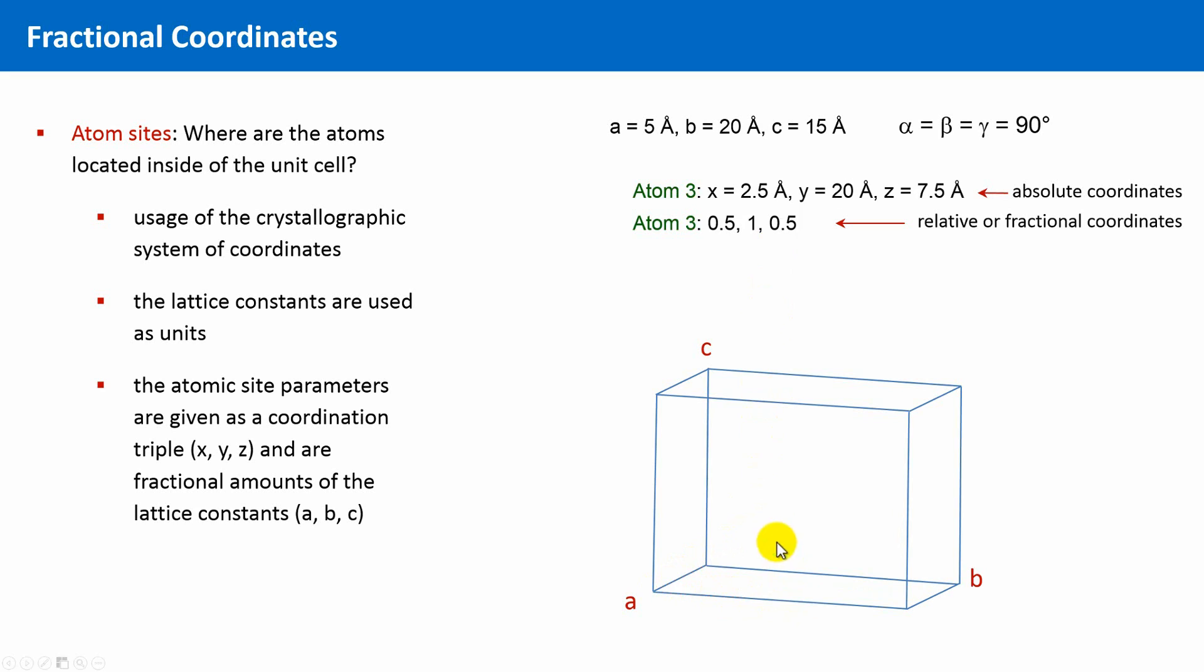And a last example. Atom 3 might be located at 0, 20 and 7.5 angstroms in terms of absolute coordinates. This corresponds to the fractional coordinates 0.5, 1 and 0.5. This is located in the center of a face, specifically the center of the b-face spanned by the lattice vectors a and c.